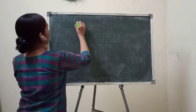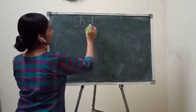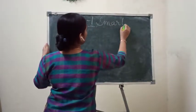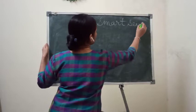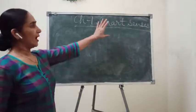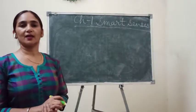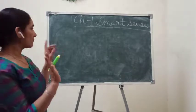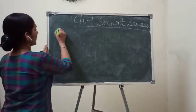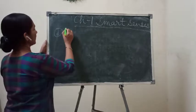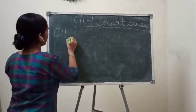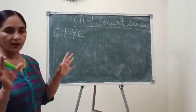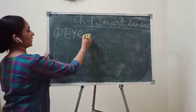So children, chapter number one — what is chapter number one? Smart Senses. Under this chapter you have studied about our senses. You know that we have five senses. We will write the names of the sense organs first, and then write the senses.